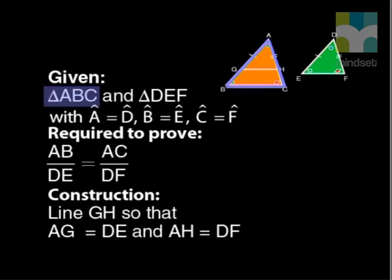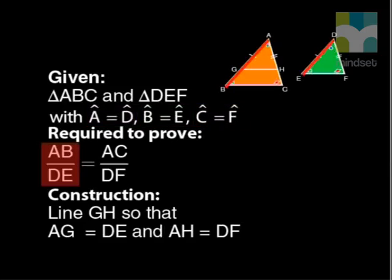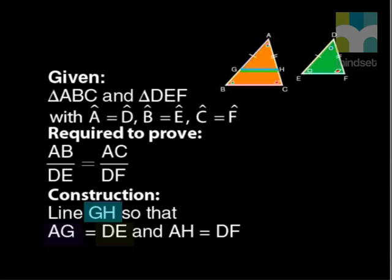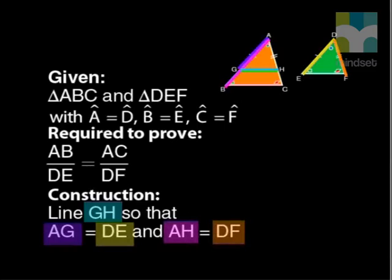Let's have a look at the whole theorem again, one line at a time. Given triangles ABC and DEF with A equal to D, B equal to E and C equal to F. Required to prove that AB divided by DE equals AC divided by DF. Construction is line GH so that AG equals DE and AH is equal to DF.